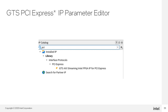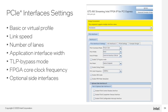To configure the IP, open the GTS Axie Streaming IP for PCI Express Parameter Editor found in the IP catalog in Quartus or Platform Designer. The parameter editor is arranged as a series of tabs, each focusing on some aspect of the IP core. The first tab is for configuring the IP interfaces to the link or the application layer. Here, you can choose a PCIe profile which determines which IP features are shown in the parameter editor. We are showing the basic profile, which is the default.